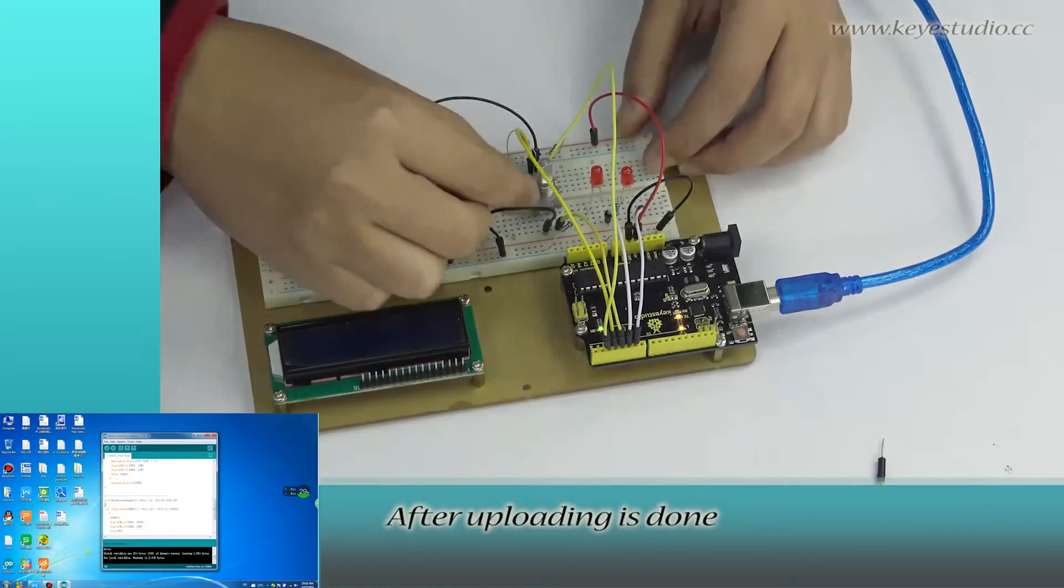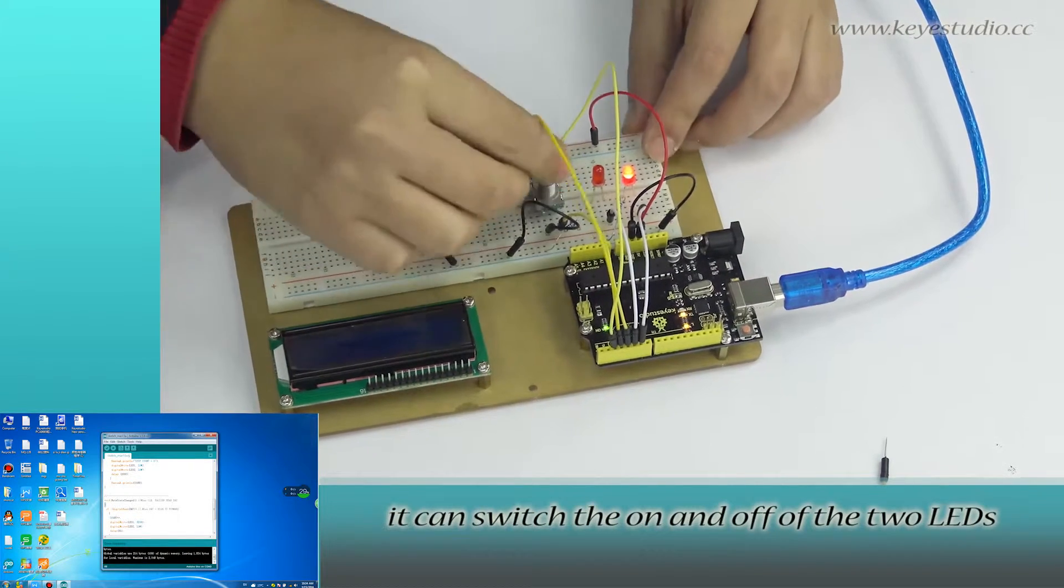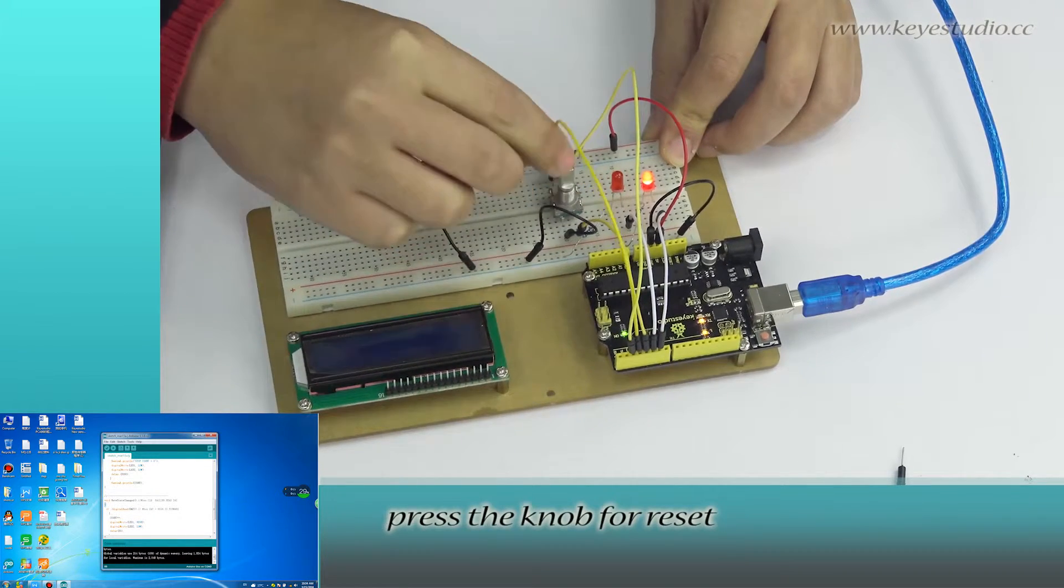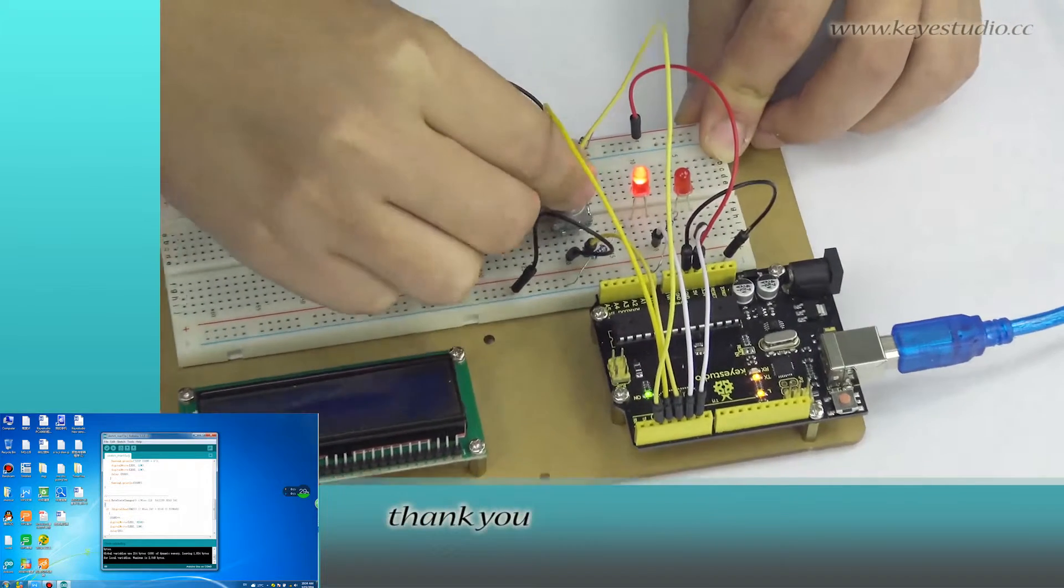After uploading is done, rotate the encoder. It can switch the on and off of the two LEDs. Press the knob to reset to begin the next round. Test is now complete. Thank you.